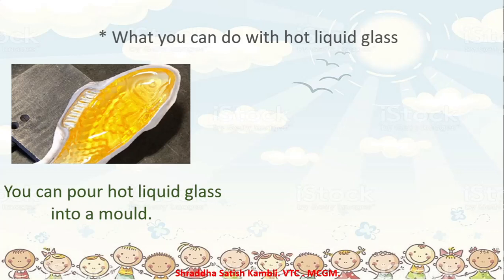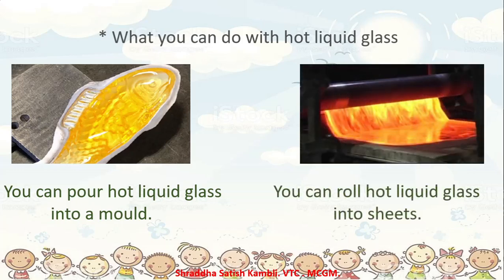What is the mold? I already told you the example of the modak which your mummy makes. See, this is a fish-shaped glass - a glass fish which is made up of glass. They must have taken the hot liquid glass and poured it into the mold which is shaped like a fish. So you have a glass fish. What else can you do with hot liquid glass? We can also roll hot liquid glass into sheets. You have sheets of glass - the window pane is made up of a sheet of glass. How do you get this sheet? You roll out the hot liquid glass, just like your mummy rolls out chapatis, and you get sheets of glass.